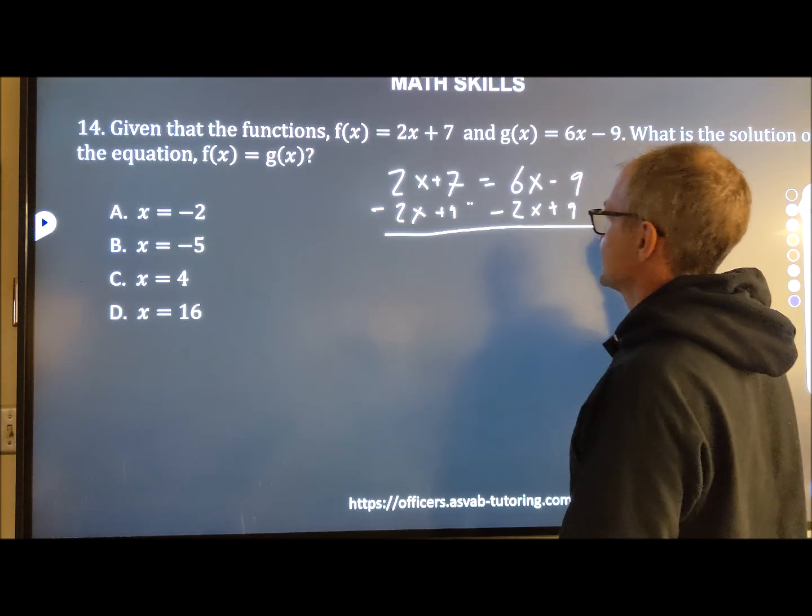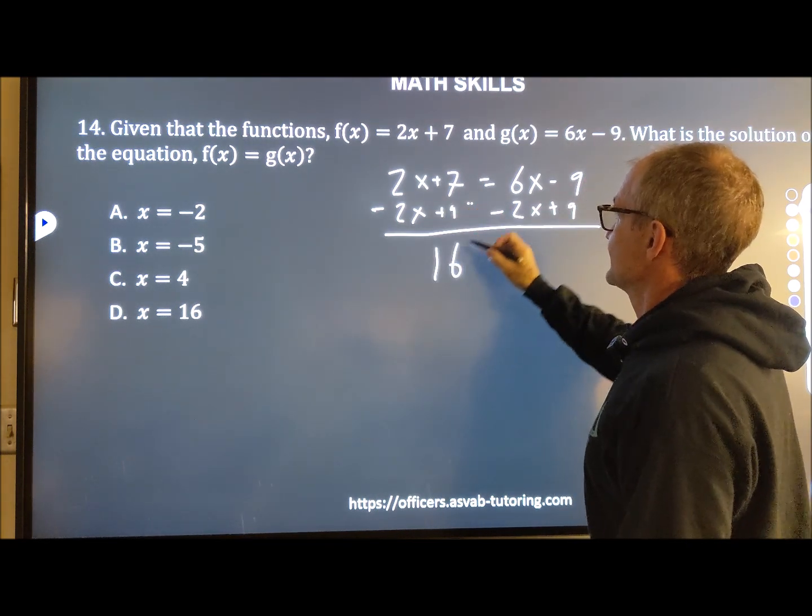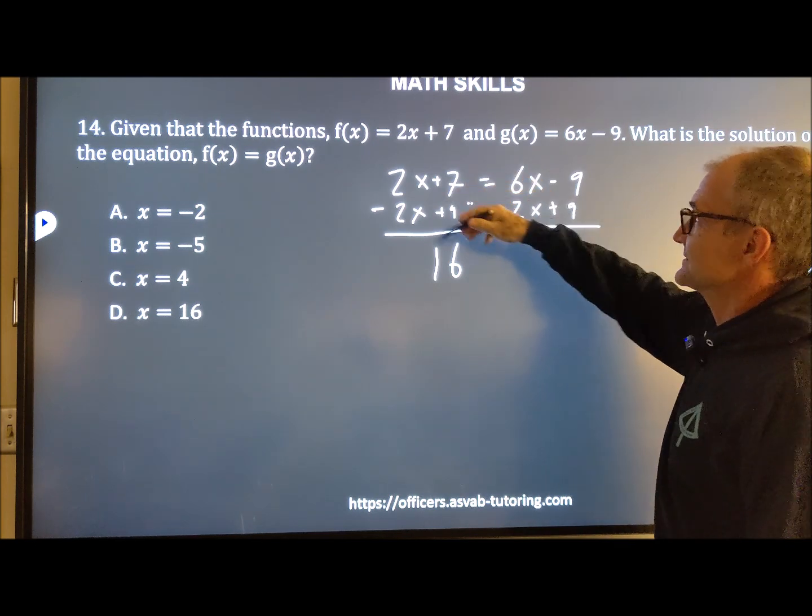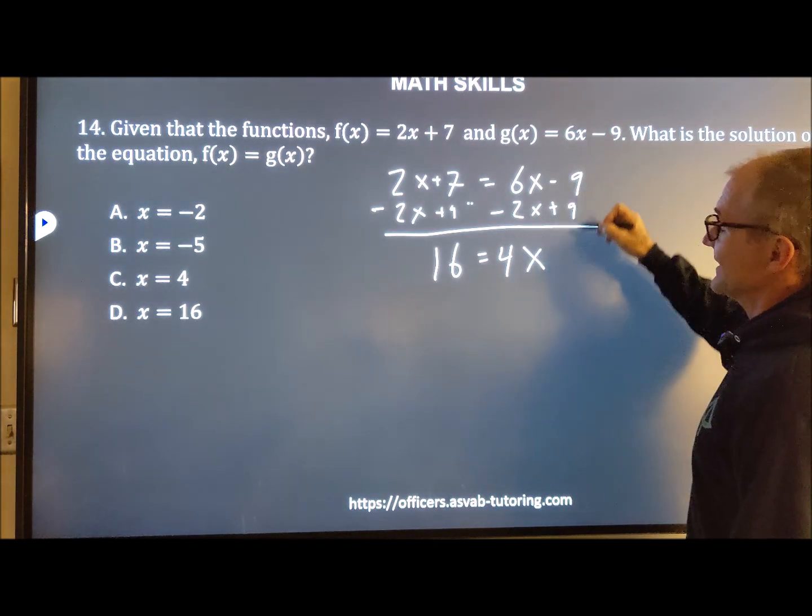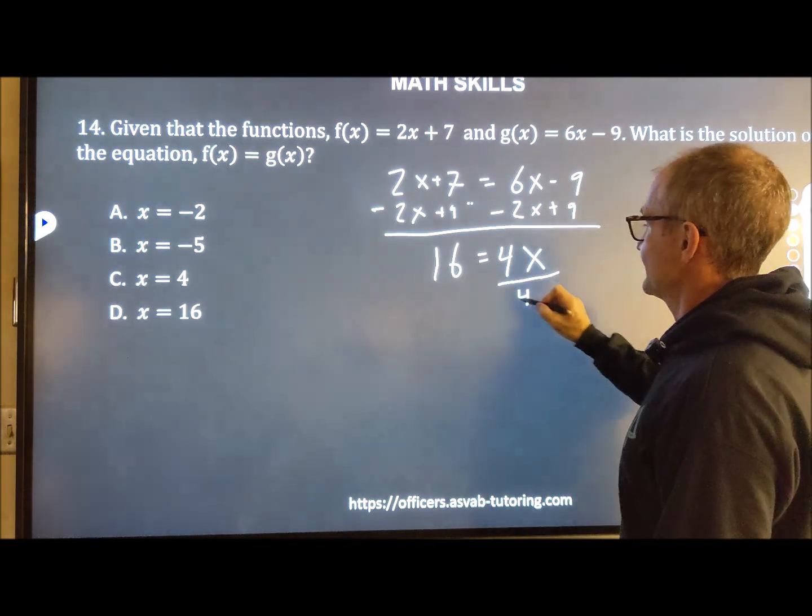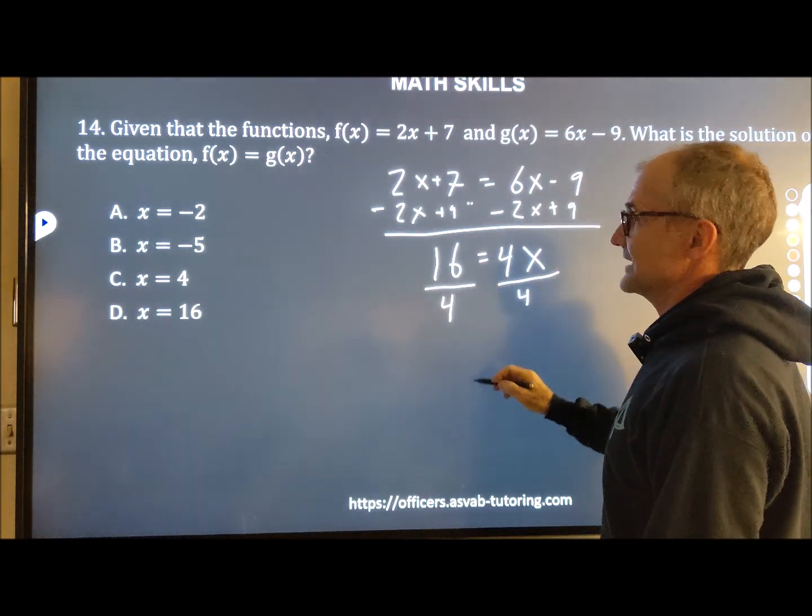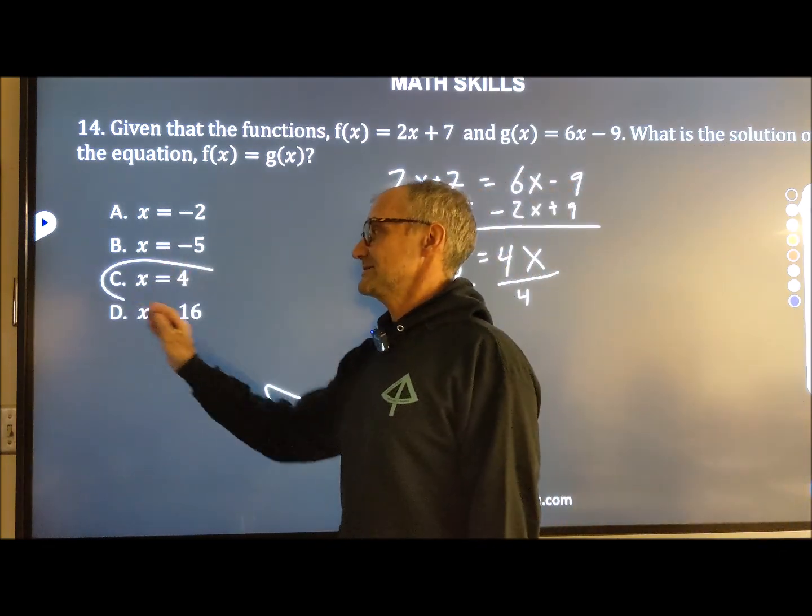That's going to give me a 16 on the left. 7 and the 9, my x's cancel. 6x minus 2x is 4x. And my 9's cancel. Divide both sides by 4. And I can see x is equal to 4. Answer C right there.